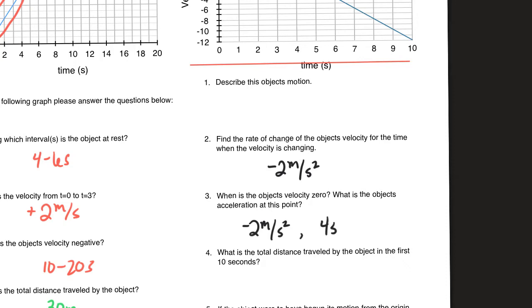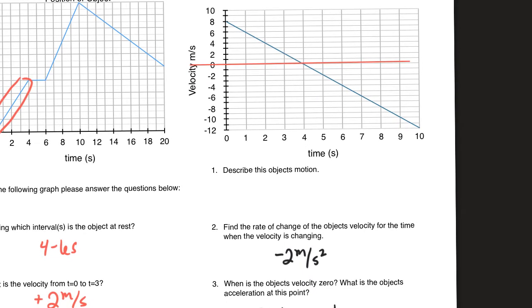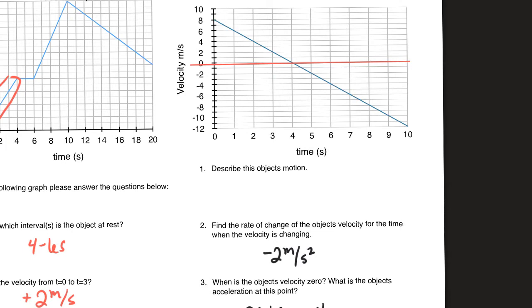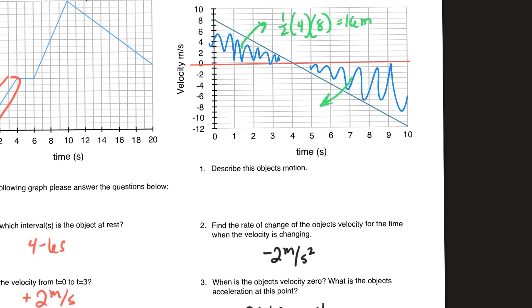What is the total distance traveled by the object in the first ten seconds? You'll most likely have to find the area of each section to get the distance — I expect to see your work. The first triangle: one half times four times eight equals sixteen meters. The second triangle: one half times six times twelve equals thirty-six meters. Add the absolute values together to get the total distance: fifty-two meters.